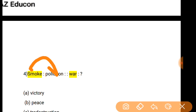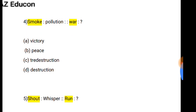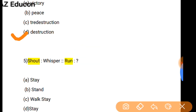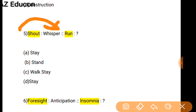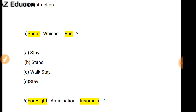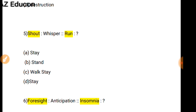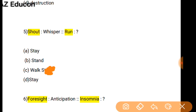As Smoke is related to Pollution — because of smoke, pollution is created — so War is related to what? Because of war, destruction is created, so Destruction is the correct option. Next: As Shout is related to Whisper, so Run is related to what? The correct answer is Walk.